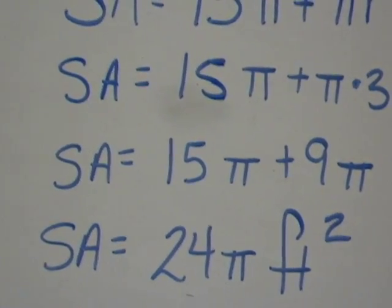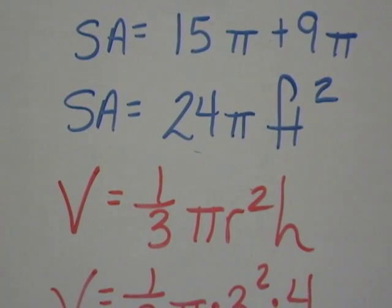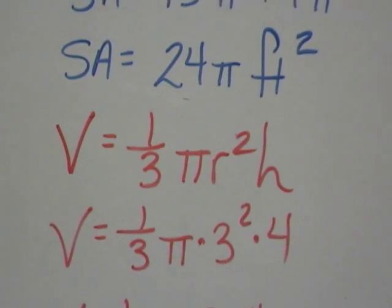Lastly, let's find the volume. The volume formula is 1 third pi R squared H. Plug in all the information you know, which is the R and the H. Those were both given.